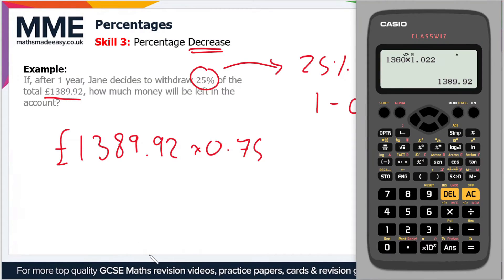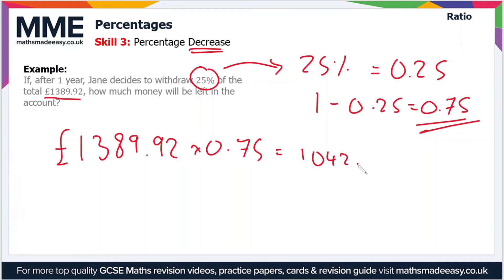So 1389.92 times 0.75 will give us the amount left in the account. We've got that number stored in the calculator from the last question, so if we multiply by 0.75, that gives us £1,042.44. That is the amount left in the account once you withdraw 25%.